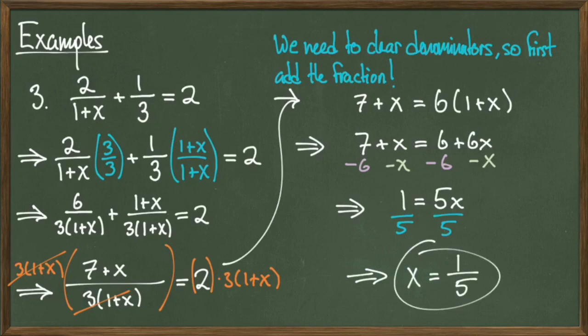To recap this problem, looking back at the beginning, it's a lot easier to clear denominators if my entire left-hand side has only one denominator to worry about. That's why I added the fractions together, simplified, so the only denominator I need to pay attention to was the 3 times quantity 1 plus x. Once I finished that, I ended up with a linear equation, and then solving for x became a familiar process.